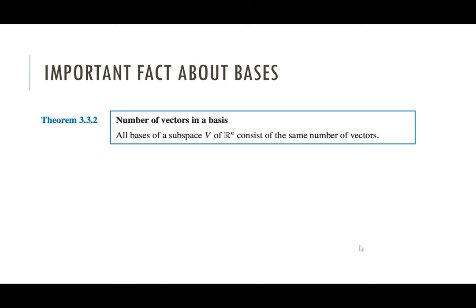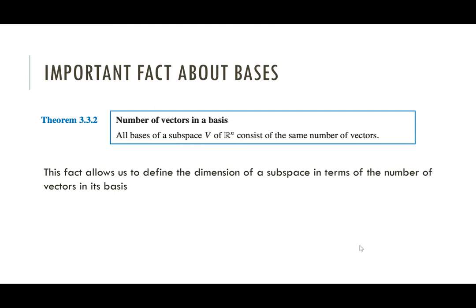All bases of some subspace have to have the same number of vectors. In R^2, for example, all bases are going to have two vectors. You may have accepted this already without knowing it's actually a theorem that needs to be proved. We are going to prove it, because it allows us to define the dimension of a subspace — as the number of vectors in the basis. That can only be done if this number doesn't depend on which basis you choose.